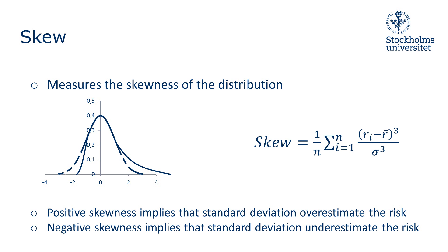Skew is calculated by summing up all the cubed deviations from the mean and dividing these by the number of observations multiplied by the cubed standard deviation.